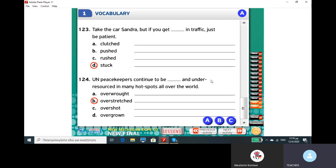Overwrought είναι ο υπερεξαντλημένος. Overshoot means υπερβαίνω τα όρια. And overgrown είναι ο υπερβολικά ανεπτυγμένος.